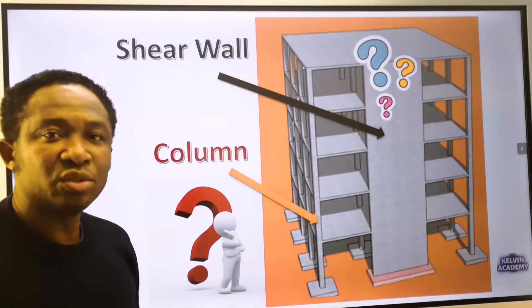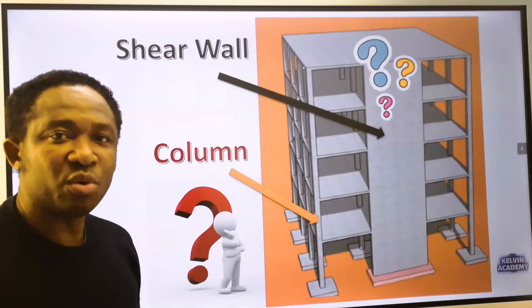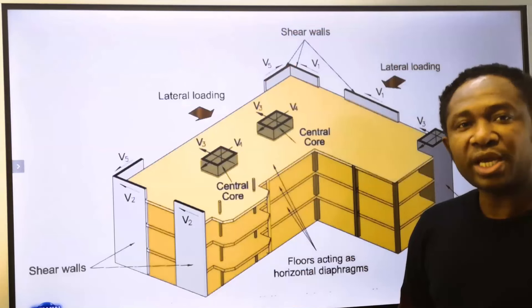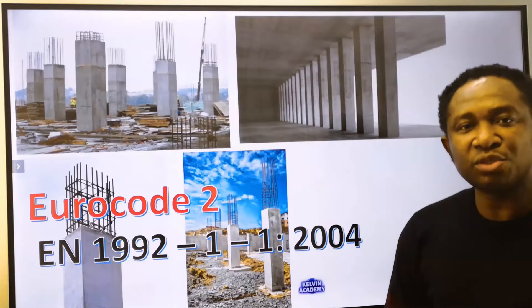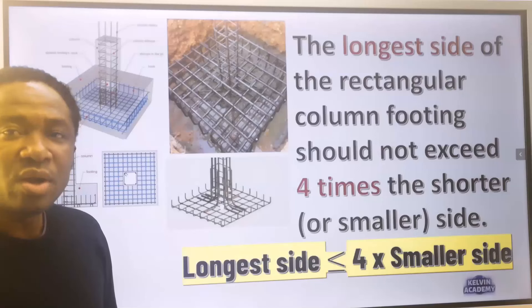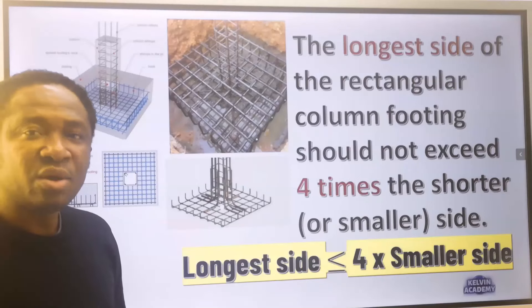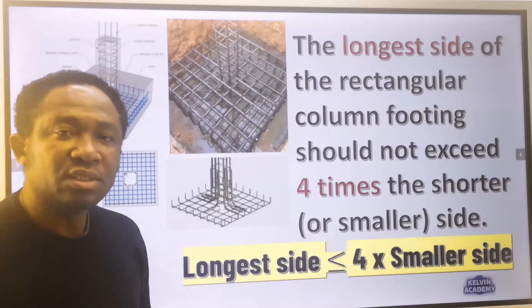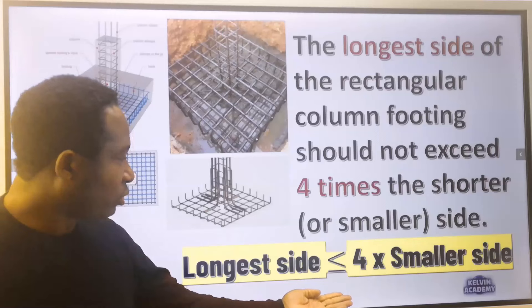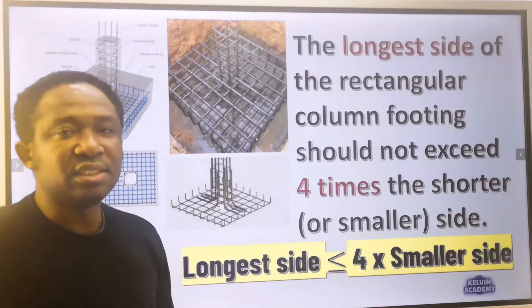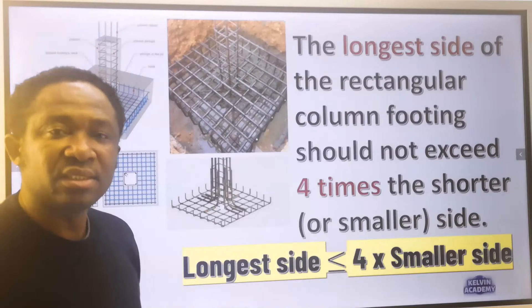But when does a column in civil engineering become a shear wall? Always check with the design code of your country. Let's look at the code for the detailing of a reinforced concrete footing. The longest side of the rectangular column footing should not exceed four times the shorter side. That is, the longest side must be less than or equal to four times the smaller side. When this condition is met, then you can design a column footing.